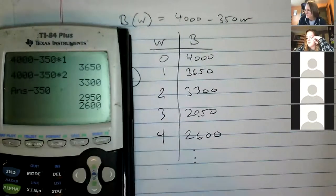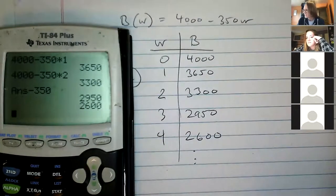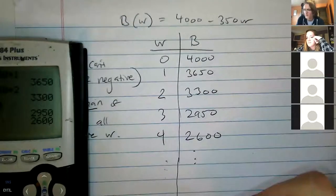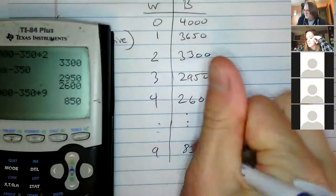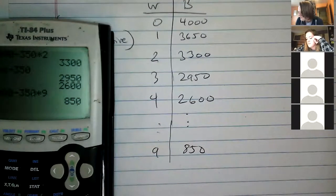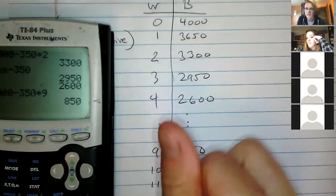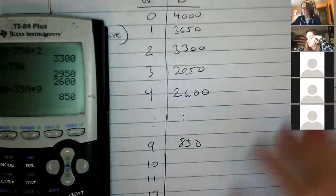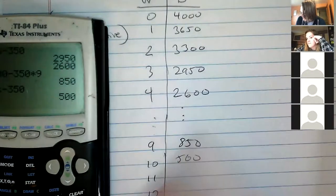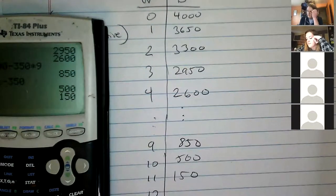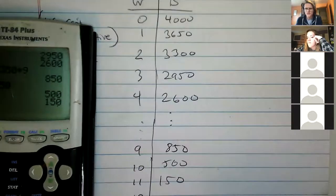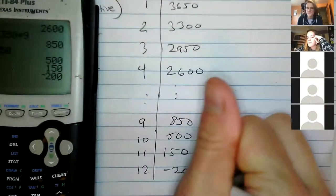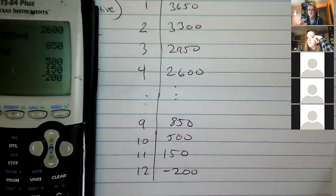Since it's going down slowly, jump to bigger numbers. Try W=9: 4,000 minus 350 times 9 is 850 — getting closer. Try W=10: 500. W=11: 150. W=12: negative 200. So at 11 weeks there's $150 left, but at 12 weeks you'd be at negative $200. So she can't go 12 weeks, and goes down by 350s until you run out — she can stay about 11 weeks.